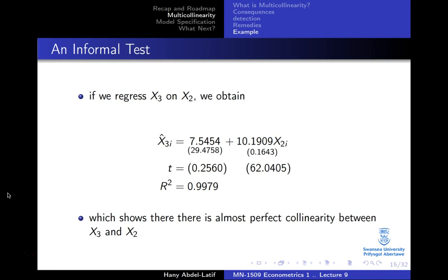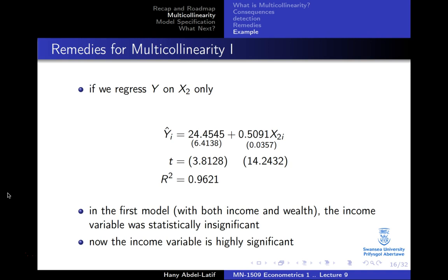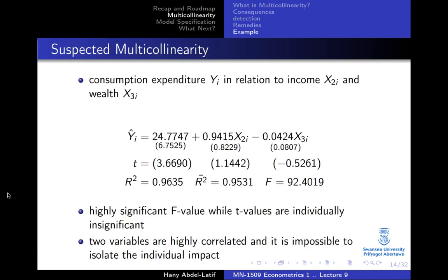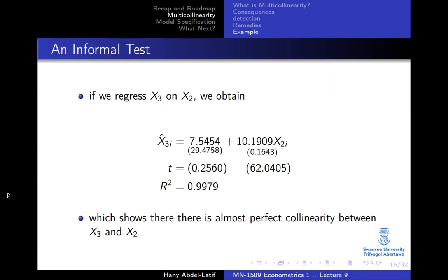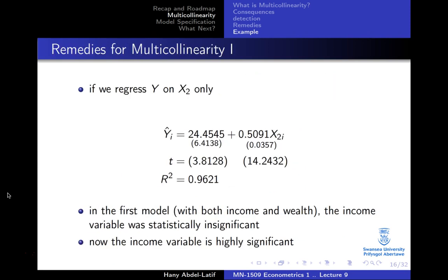One solution is to drop one of those variables. Let's regress Y on X2 only (income). The R-squared remains very high at 96%. But look at what happened to the T-ratio — it jumped to 14.24 and became highly significant. Recall that when both X2 and X3 were included, the T-ratio for X2 was very small due to multicollinearity. Once we drop X3, it becomes significant.